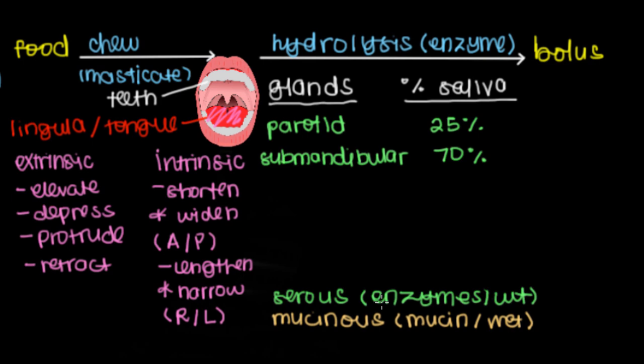The next gland that we have is called the sublingual gland. Just like the name suggests, this guy sits right below our tongue or our lingula as we just learned that term. It makes up about 5% of our saliva and, as the color suggests, it mainly releases mucin. It does release some enzyme but less so than the mucinous stuff.